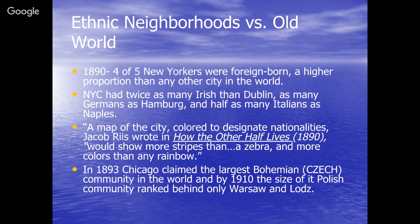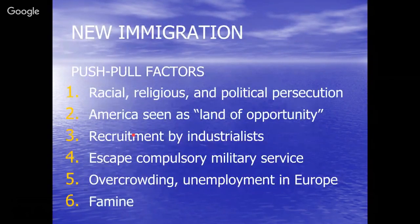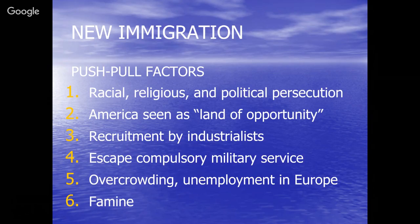We need to understand what pulled immigrants here. They came fleeing persecution, seeing America as a land of economic opportunity. Many Europeans were recruited by industrialists for their cheap labor. Many came to escape compulsory military service, especially in Italy. Overcrowding, unemployment in Europe, and famine were also driving factors. The Jungle suffices well in illustrating these experiences.